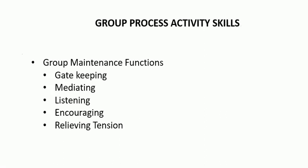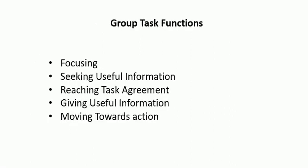When you have developed interpersonal skills, you also have to manage group process activity skills. Other than communication, you should know how to maintain group functions — you have to talk with different people, note your timing, listen to people, sometimes mediate, encourage, and relieve tension. Whether you are a trainer or an employee, you need to work on group skills, team skills, and interpersonal skills. Good training skills also involve group task functions: how to seek and give useful information, reach a task or goal agreement, and know what information is relevant.